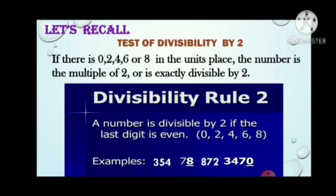Example: 354 — your last digit is 4. 78 — your last digit is 8. 872 — here you can see the unit's place is 2. 3470 — unit's place is 0. So all these numbers are divisible by 2.